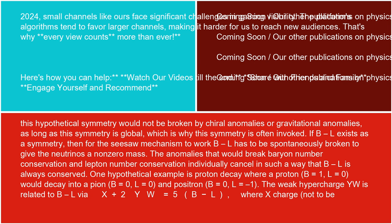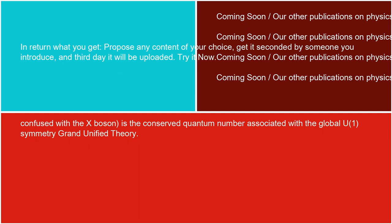The weak hypercharge YW is related to B-L via X + 2YW = 5(B-L), where X charge — not to be confused with the X boson — is the conserved quantum number associated with the global U(1) symmetry in grand unified theory.